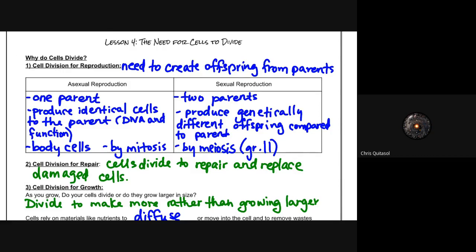There are two types of reproduction that cells go through. The first is asexual reproduction where there's one parent and it produces that identical cell. This is a process that produces body cells within humans and other animals by the process of mitosis. The second option is sexual reproduction where there are two parents and they produce genetically different offspring compared to the parents. This is done via the process of meiosis which you will learn in grade 11 biology.